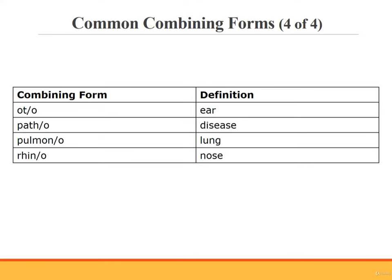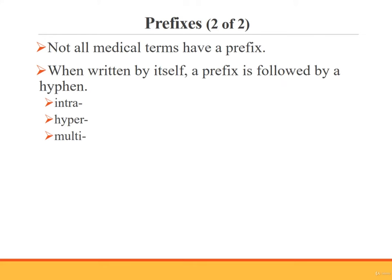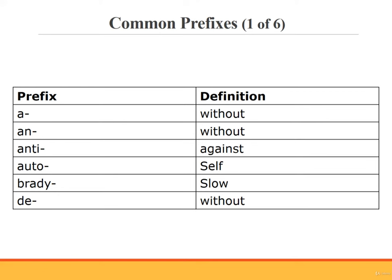To remember that rhino means nose, it may help to think of the horn on a rhinoceros' nose. A prefix is a word part that is added to the beginning of a term. The prefix may describe the location of an organ — for example, the prefix sub means below. The prefix can also describe the number of parts — for example, mono means one. Finally, the prefix may tell us time, as in frequency — the prefix post, for example, means after. While many medical terms do have a prefix, not all of them have one. When a prefix is written by itself, it is followed by a hyphen — for example: intra-, hyper-, multi-. The next few slides list some common prefixes and their definitions. These are very important to learn as you will see them over and over again.